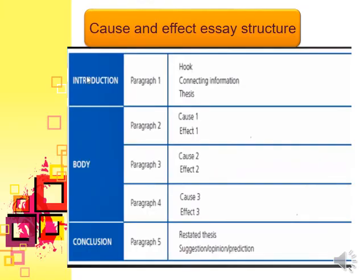Let's review the structure of a cause and effect essay. The introduction is paragraph one, where you state your topic and mention that you will discuss both causes and effects. In the body — paragraphs two, three, and four — each paragraph covers one cause and one effect. The conclusion restates the topic sentence and may include a suggestion, opinion, or prediction about what might happen.